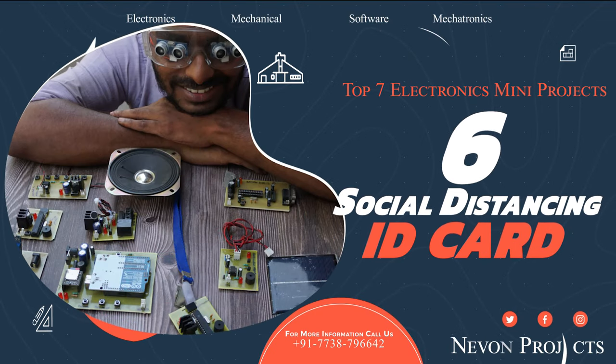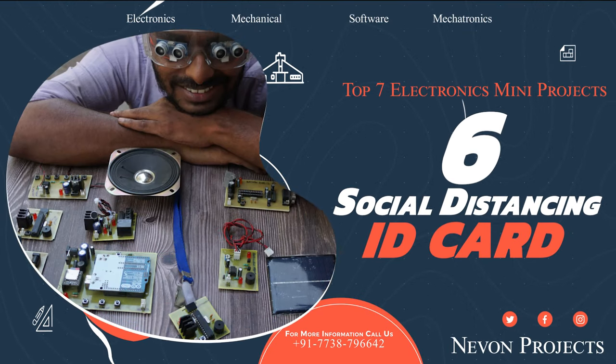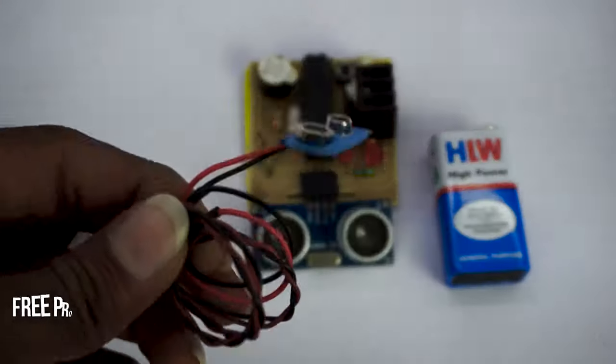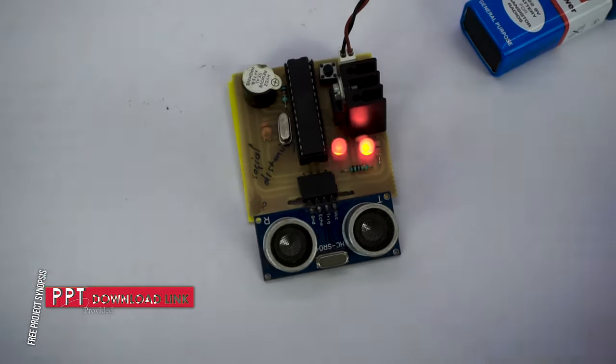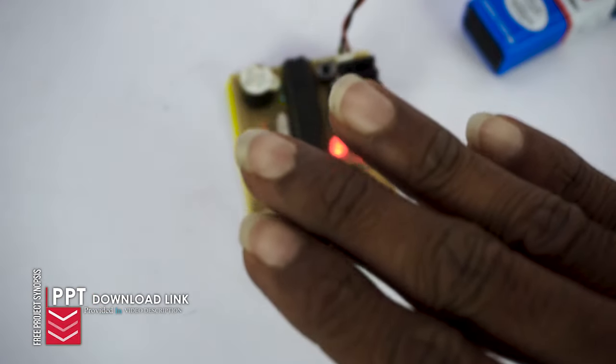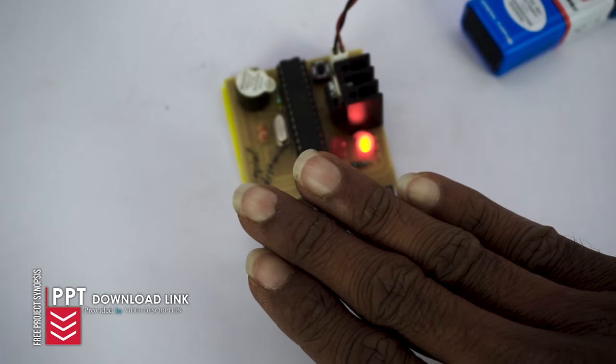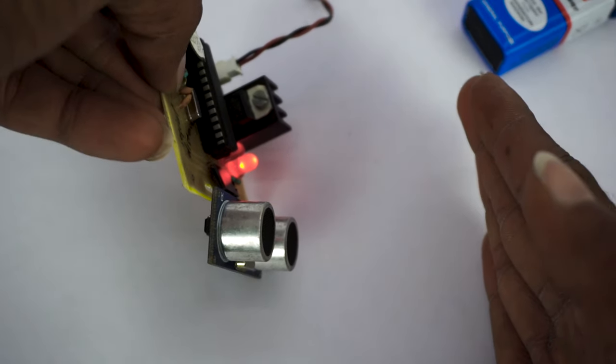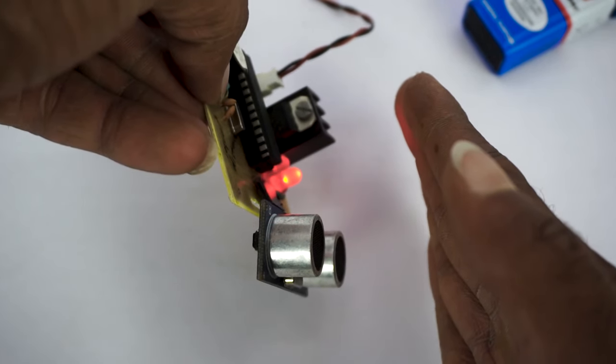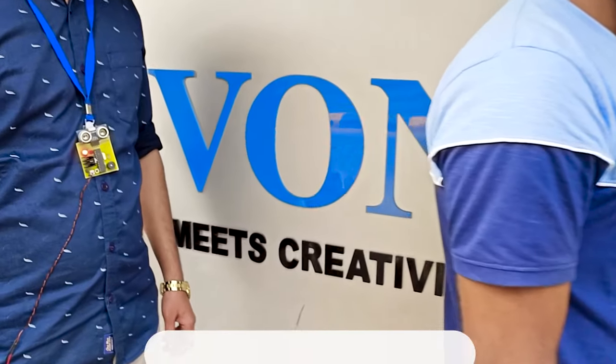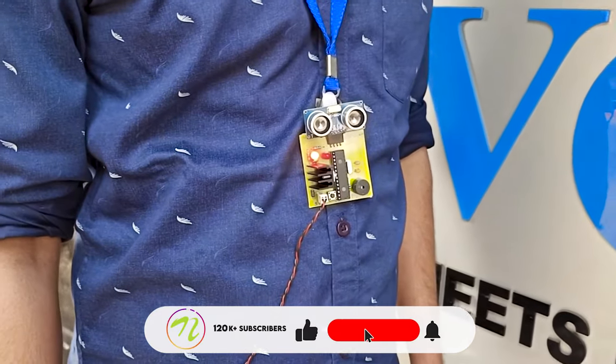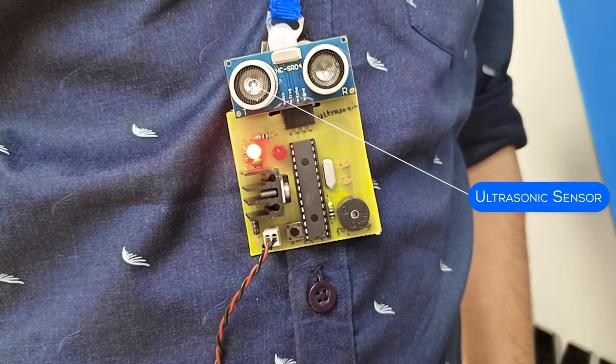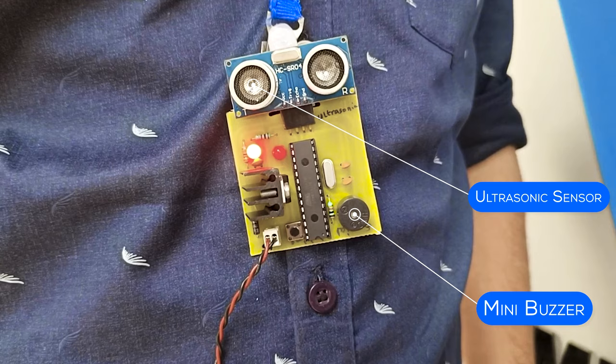Social distancing ID card. This is a post-COVID innovation that automates the process of social distancing depending on the distance between two people. It will operate the buzzer or put a buzzing sound of equivalent intensity depending on the distance between two people. This system has two main components including ultrasonic sensor and a small buzzer which are powered by an ATmega microcontroller.